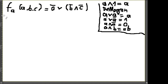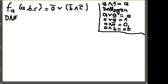Unser Ziel ist eine DNF. Wir haben auf oberster Ebene zwar schon ein Oder, das ist schön, aber wir haben noch nicht alle Variablen drin. Vor dem Oder fehlen uns B und C, nach dem Oder fehlt uns in der Klammer noch ein A. Hat jemand einen Vorschlag, wie wir da vorgehen?